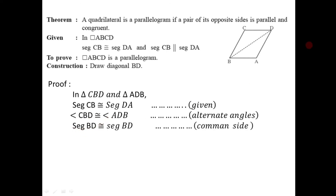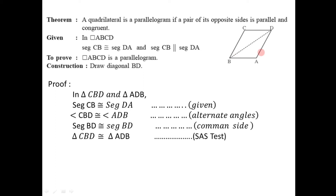The third constituent is segment BD is congruent to segment BD, as it is a common side for both triangles. That's why these two triangles are congruent by the SAS test, because there are two sides and the angle between them congruent to the corresponding sides and angle of the other triangle.